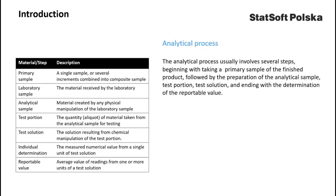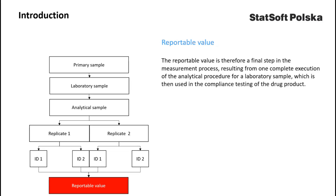The measurement process usually involves several steps, beginning with taking a primary sample of the finished product, followed by preparation of the analytical sample, test portion, test solution, and ending with the determination of the reportable value. The reportable value is the final step in the measurement process, resulting from one complete execution of the analytical procedure for a laboratory sample, and is then used in the compliance testing of the drug product.